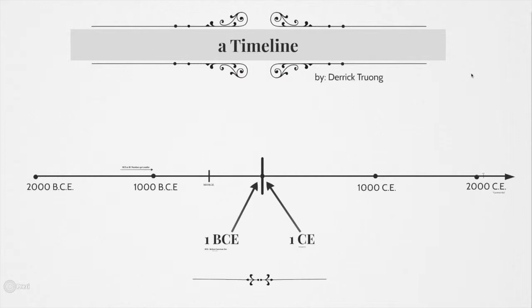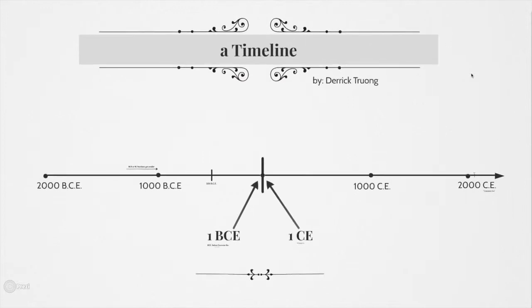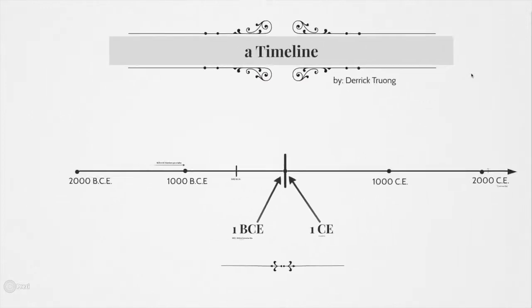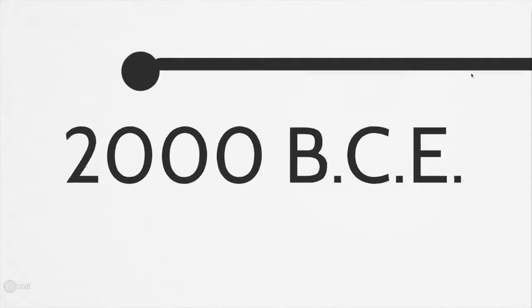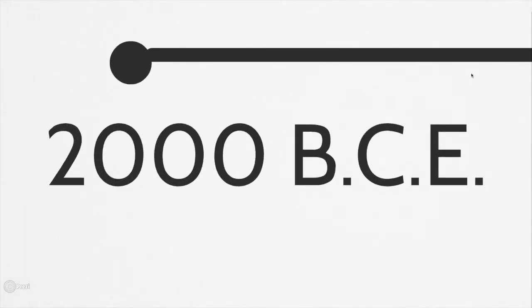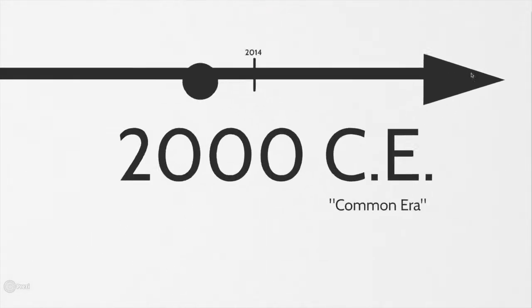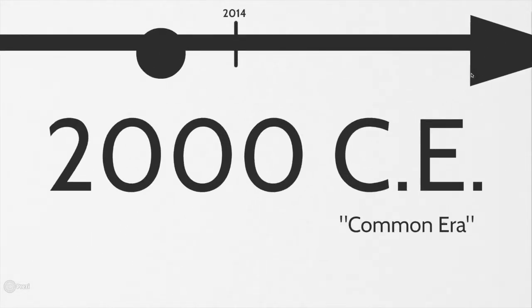I'll be showing you what BC and BCE, and AD and CE means, and how to read them. So at one end you see we got 2000 BCE, and at the other we got 2000 CE.